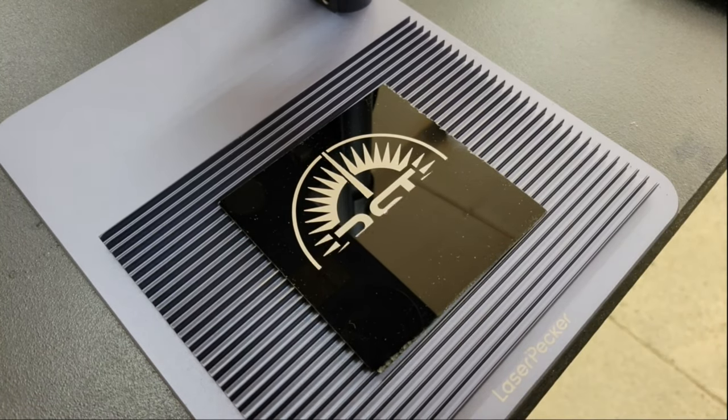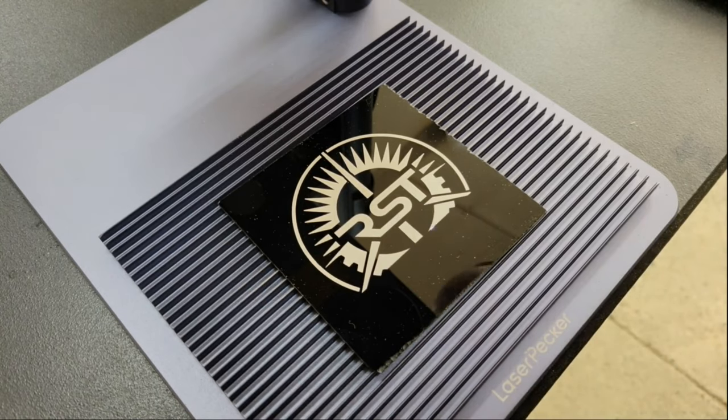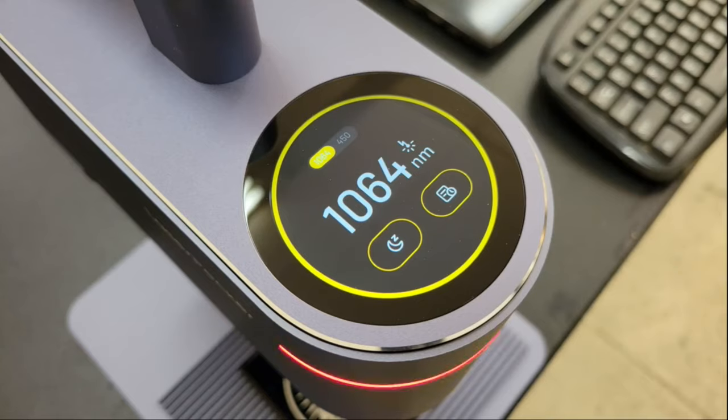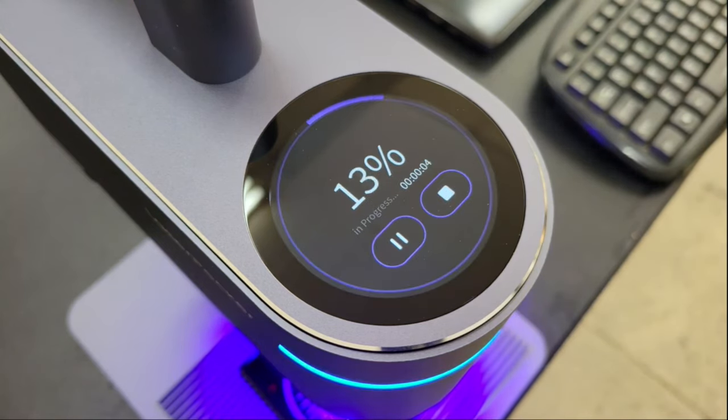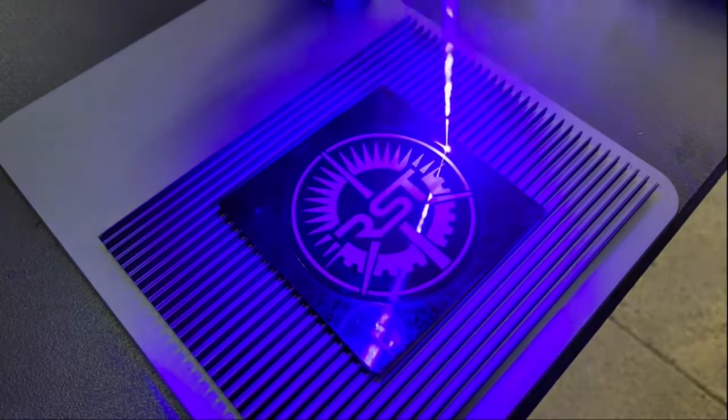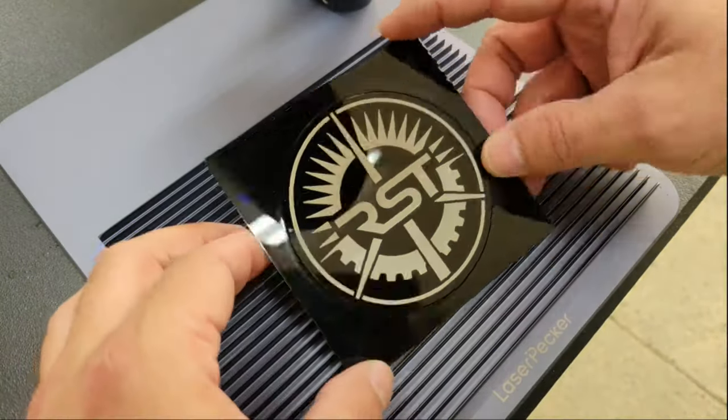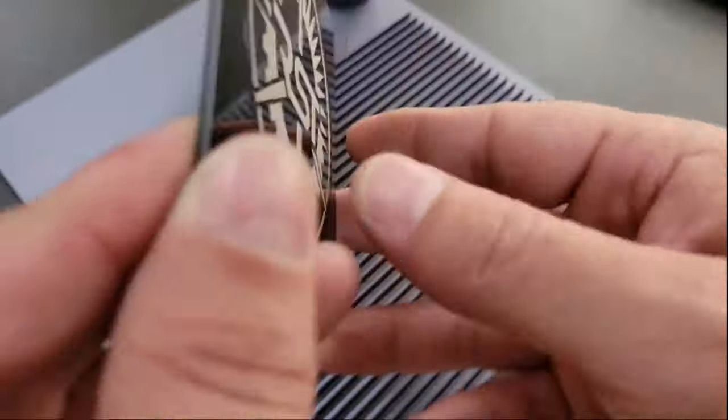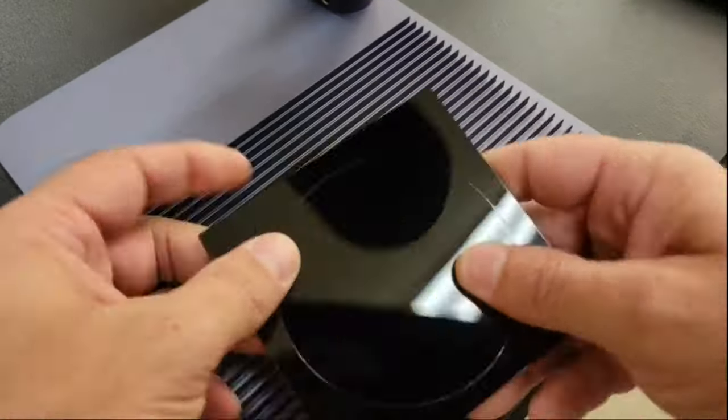So I set up the file in the software so that the logo was done by the infrared laser which would etch the surface and produce a bright textured finish and then automatically switch to cutting the outline with the diode laser. My power setting for cutting was a little low but it did a nice job regardless.